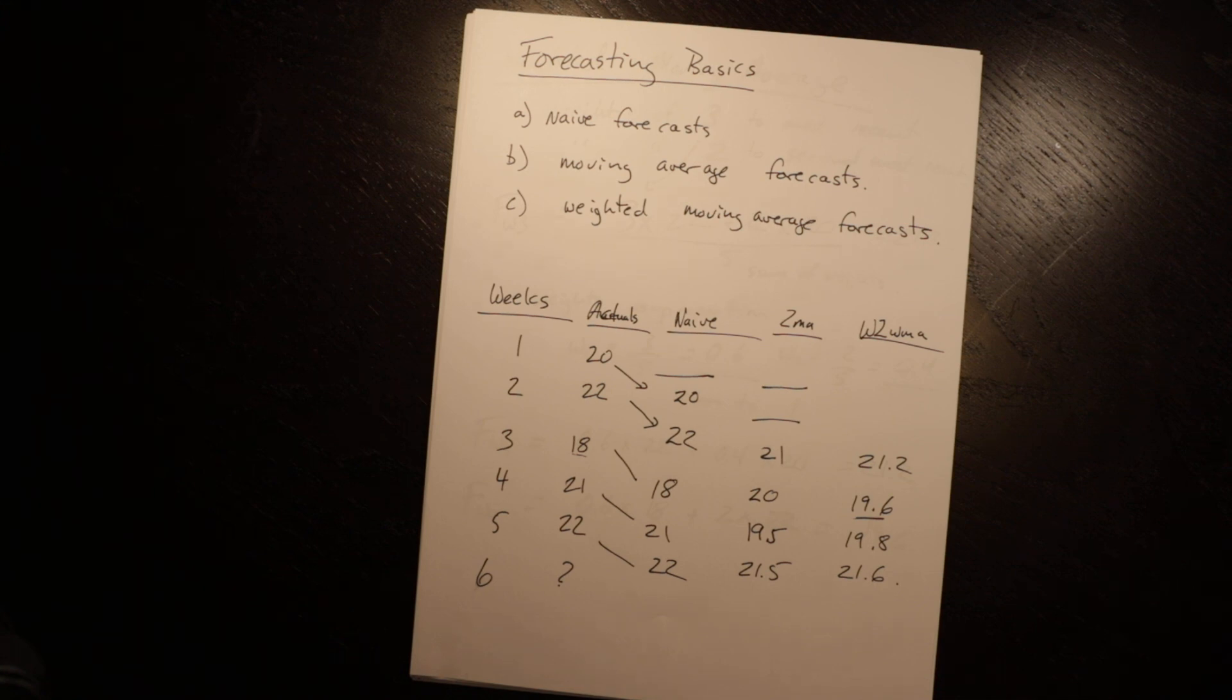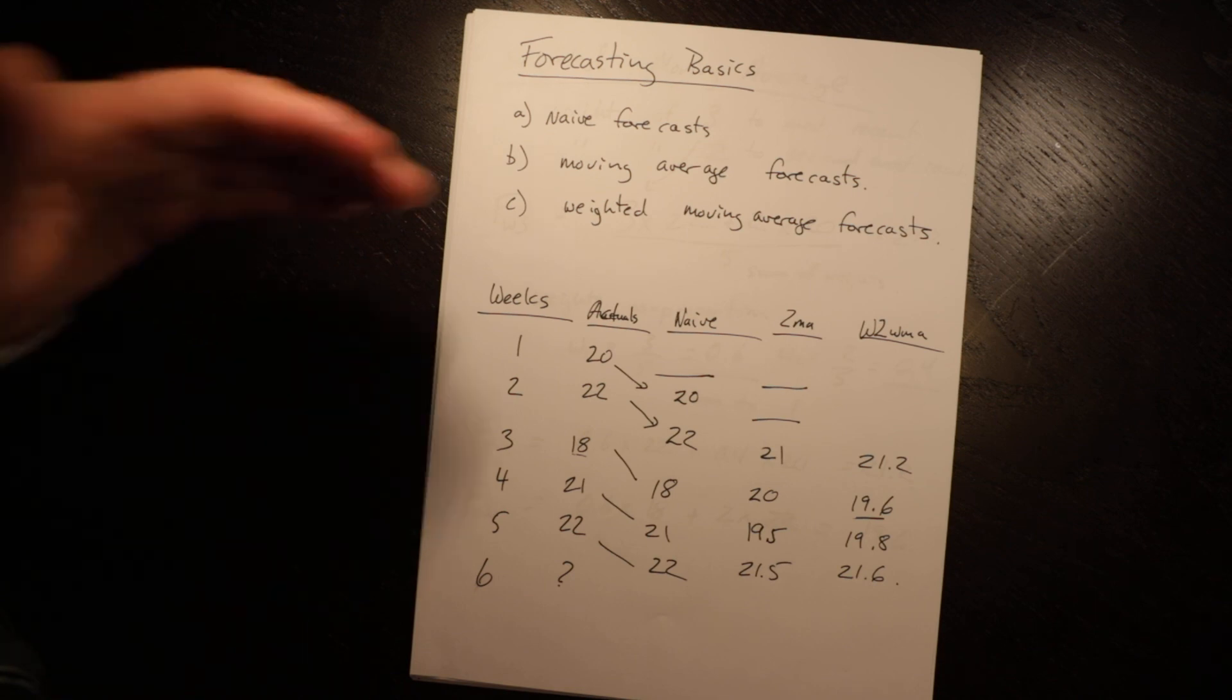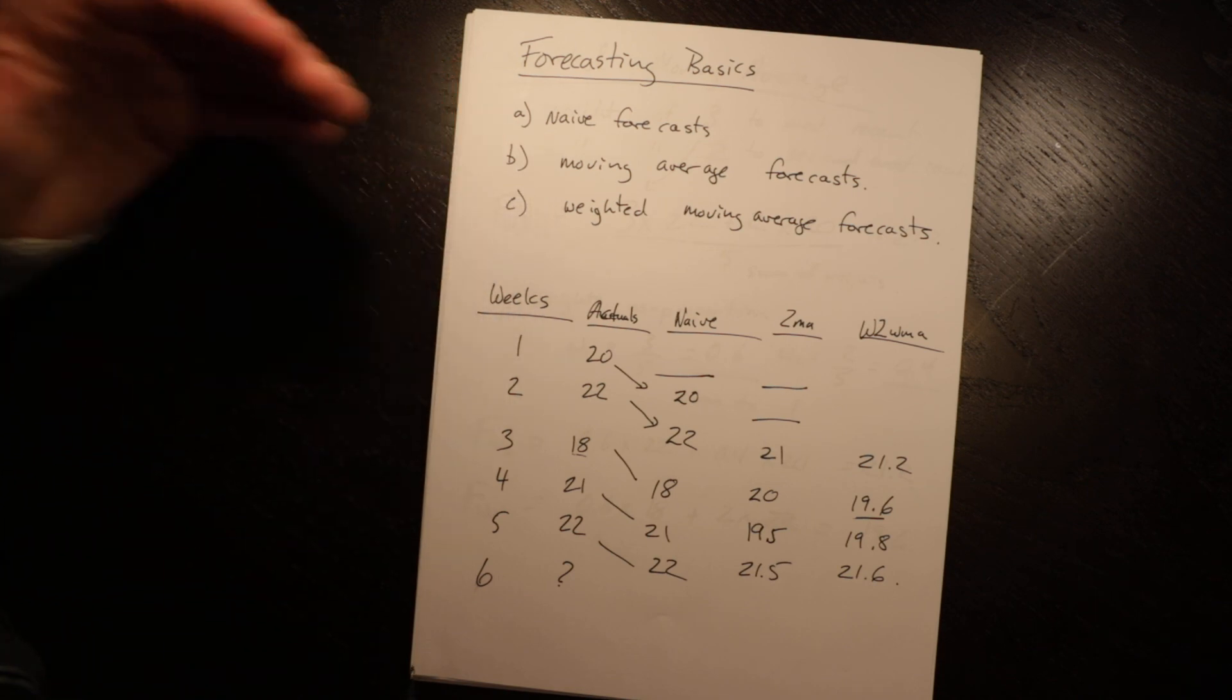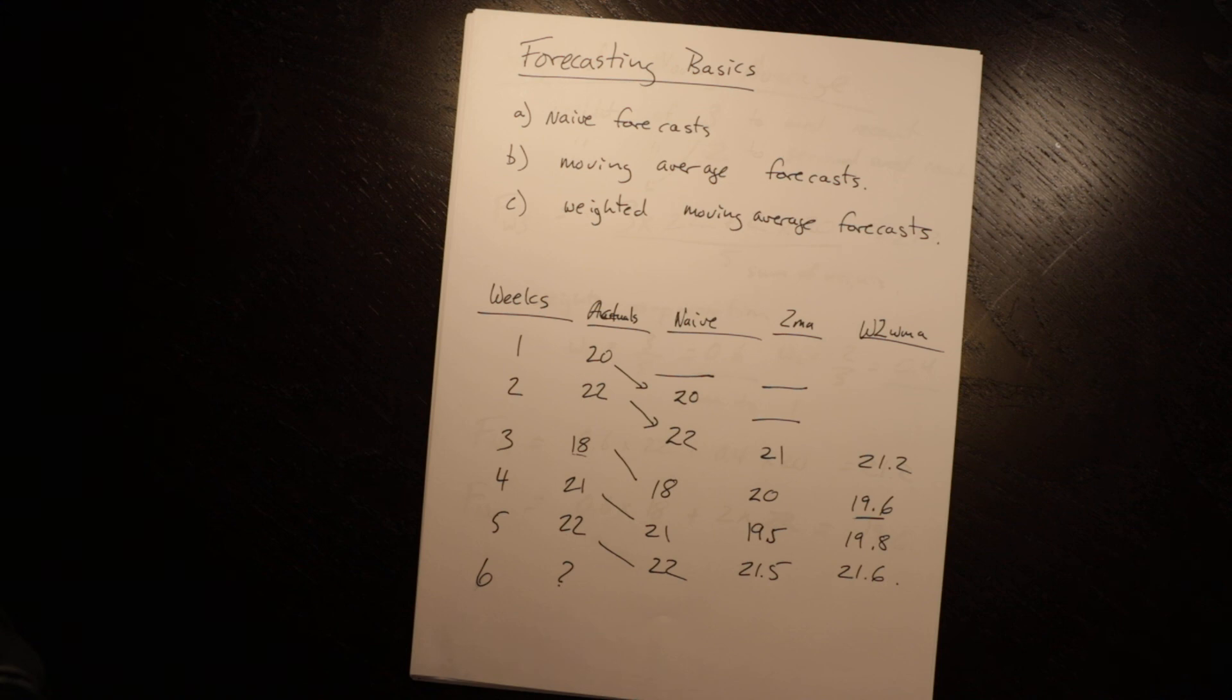So this was an example of a two week moving average, like with the simple moving average, you can have much longer, you can have three, four, five, you can have 10 if you wanted, as long as your weights sum to one. So that's a quick introduction, forecasting basics. Make sure you take a look at the exponential smoothing, the multiplicative seasonal model, and the forecasting error ones, also, to get the full picture.